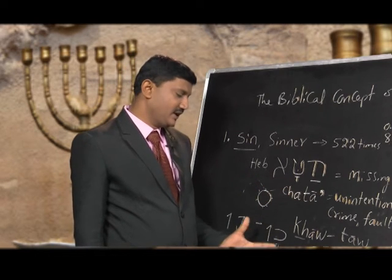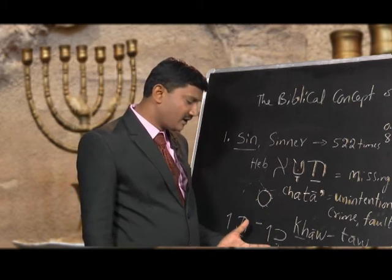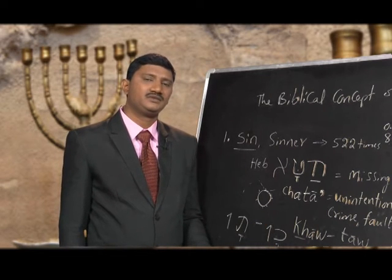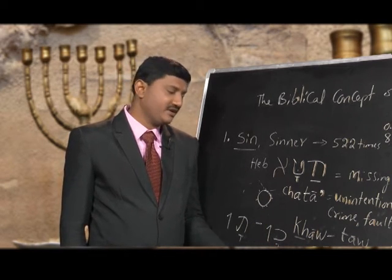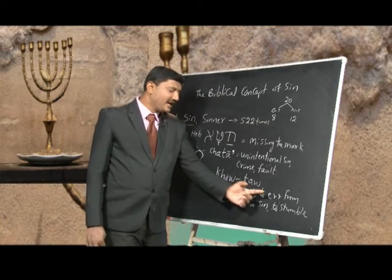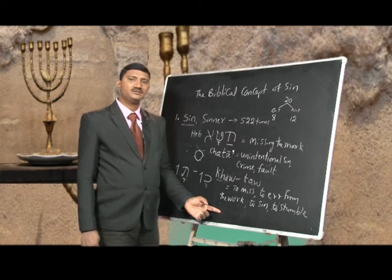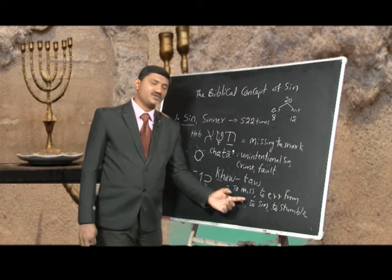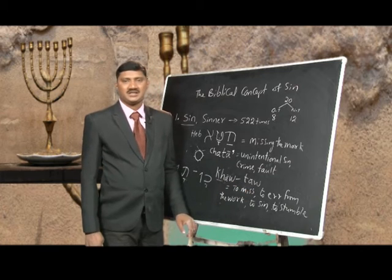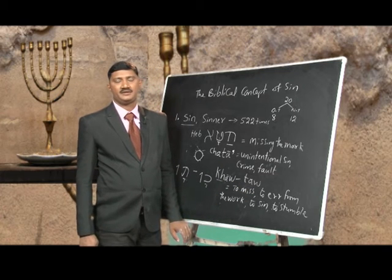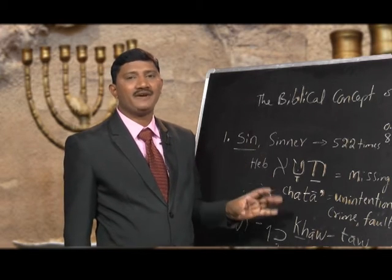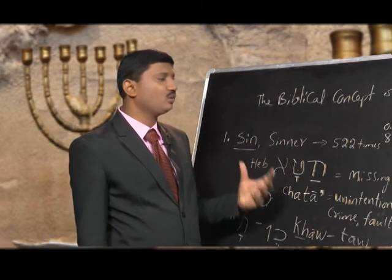So the word khata is derived from the Hebrew root word khaw-tau, which means to miss, to err from the work, to sin, or to stumble. That is the first word we see for sin in the Bible.